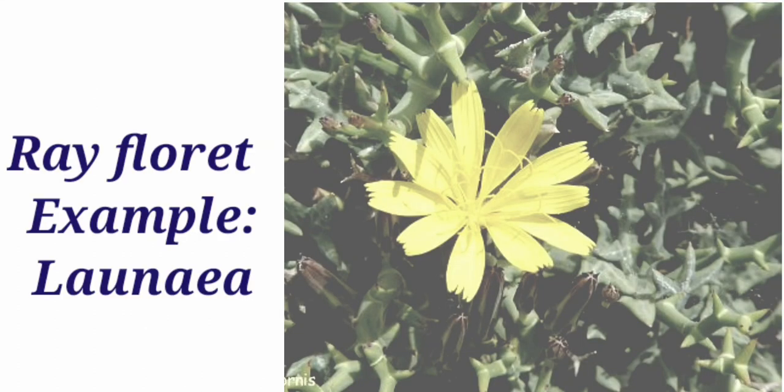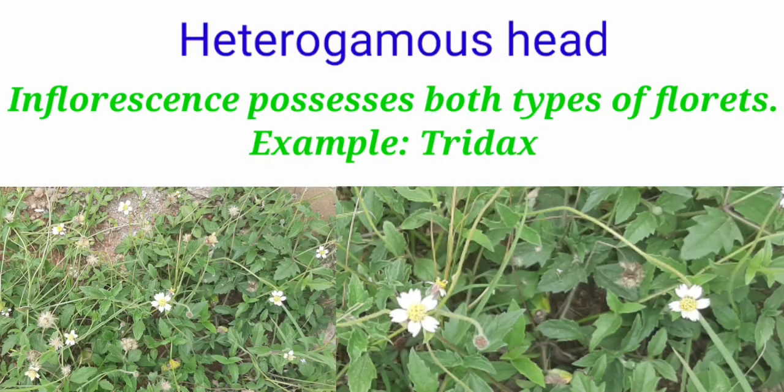So this is the flower of Launaea where you can find the ray florets arrangement and next one is the heterogamous head. In this inflorescence it contains both types of florets that is disc and ray florets. Example for heterogamous head is Tridax florets. In this picture you could find the Tridax florets where you can find the ray and disc florets.